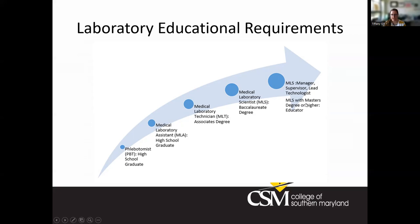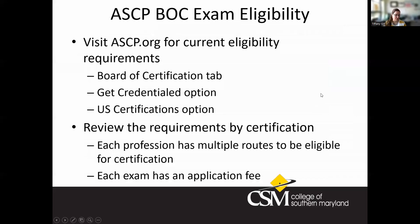To find out if you are eligible to be certified in any of these roles, go to ASCP.org, navigate to the Board of Certification tab, click 'Get Credentials,' then 'US Certification Options.' That's where you'll decide which certification you want to pursue and determine which exam you would be eligible to take.